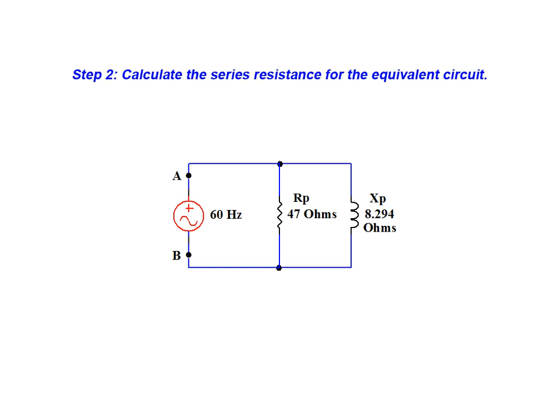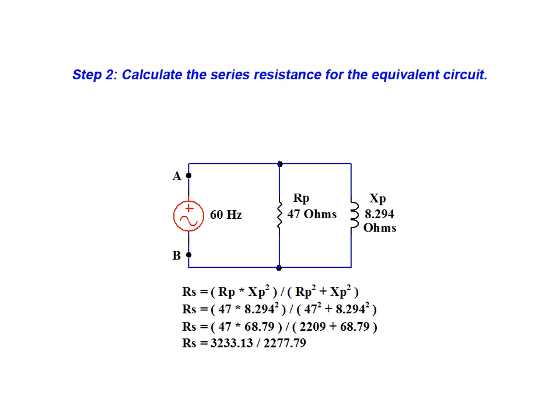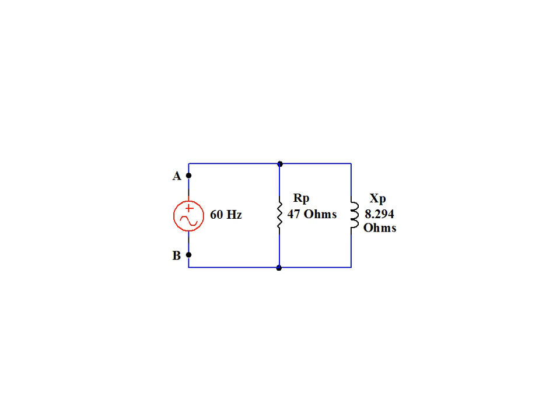Next we calculate the series resistance for the equivalent circuit using the previously provided equation. We plug in our known resistance and calculated reactance to arrive at a series resistance value equal to 1.419 ohms. This will be the value of the resistor used in our series equivalent.